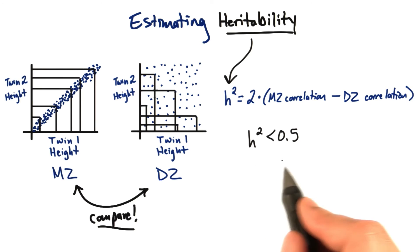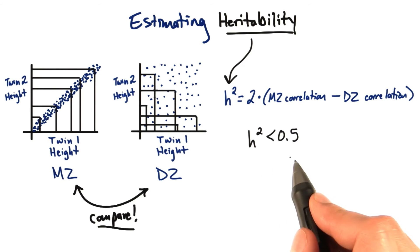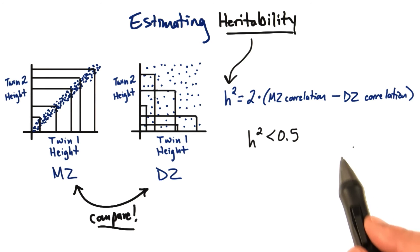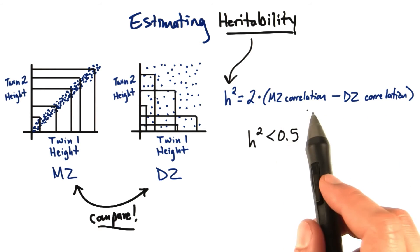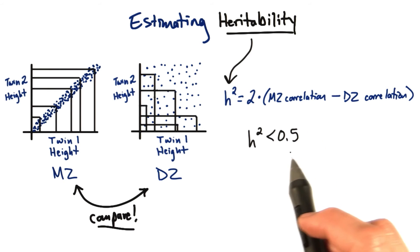So if our heritability is low, if it's under 0.5, it means that variation in the trait reflects environmental influences, because the dizygotic correlation roughly equals the monozygotic correlation. So we're getting a much lower number from our equation.